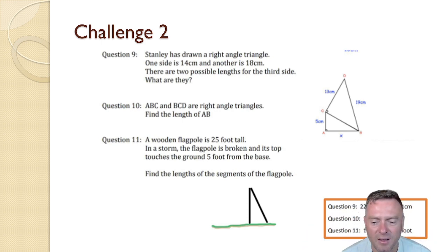Number 10: ABC and BCD are right angle triangles, find the length of AB. So we come across here to this little diagram. So we've got ABC and then BCD, so this hypotenuse here for this triangle is actually a short side on this triangle. So what we can do is find this length of CB first and then that will help us to find AB.